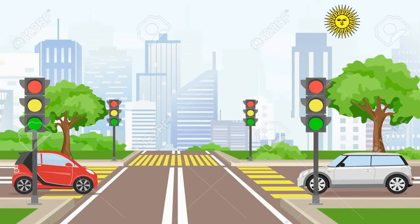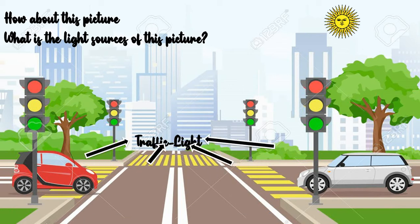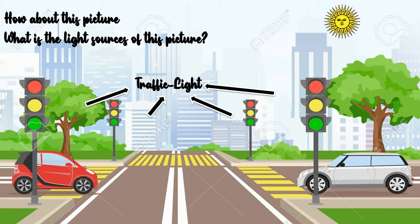Next, please observe this picture. How about this picture? What is the light source? Bagaimana dengan gambar ini? Sumber cahaya apa yang bisa kalian lihat? Good job! There are traffic lights — four traffic lights. And what else? Good job, there is a sun. Good job, there are car lamps. Traffic lights, car lamps, and sun can all produce the light, so they are called light source.